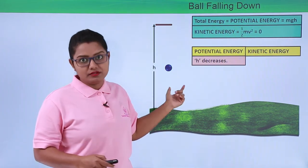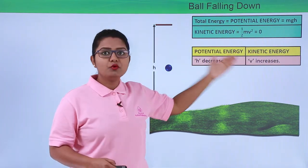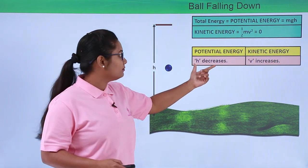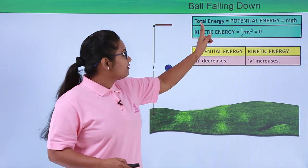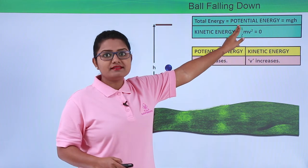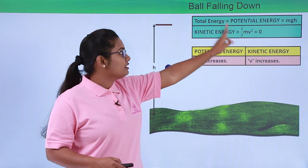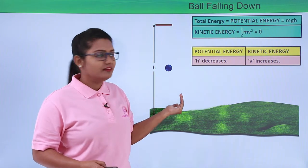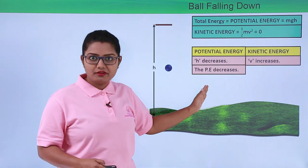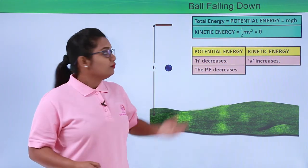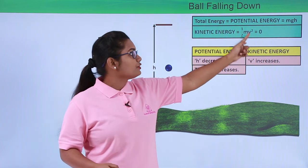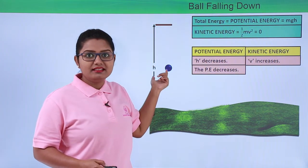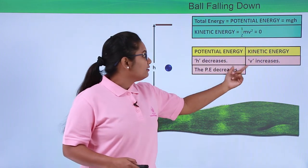The ball keeps on increasing its velocity as it moves downwards. Since potential energy equals MGH, if H decreases then the potential energy of the ball will also keep on decreasing. So the potential energy at this midpoint decreases for this ball. But kinetic energy is directly proportional to the square of the velocity, so the kinetic energy for this body will start increasing as it moves down.